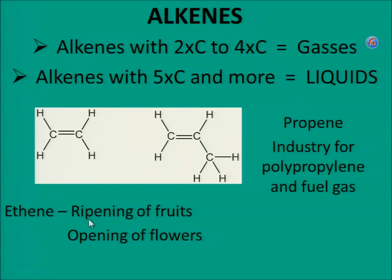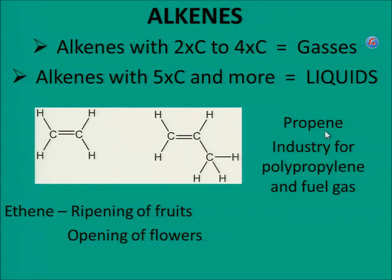Ethene is the product that causes the ripening of fruits and the opening of flowers. This is ethene: 2 carbons, therefore 'eth-', and '-ene' because it is an alkene, with a double bond. Propene is used in industry for polypropylene and fuel gas — 3 carbons with a double bond.